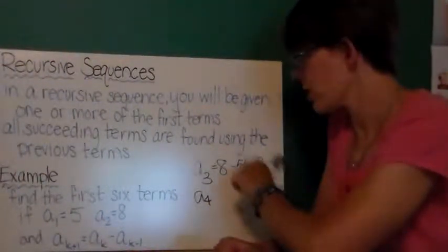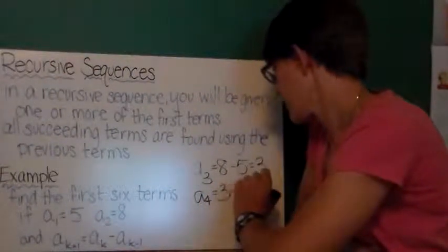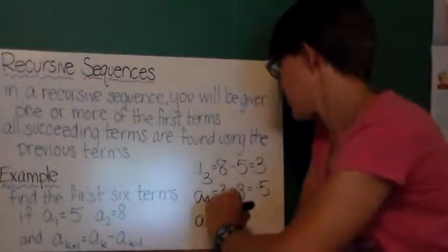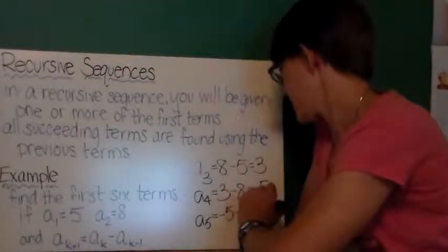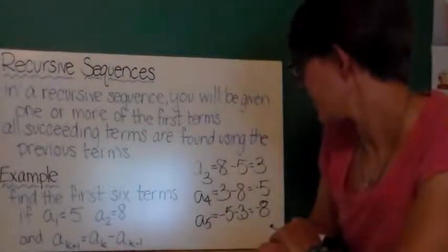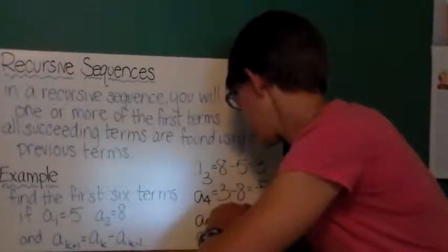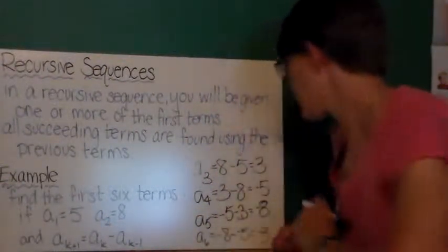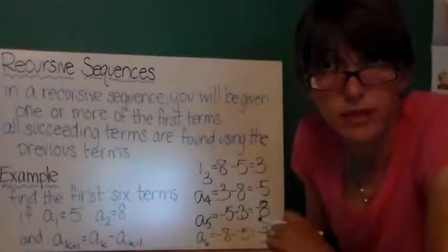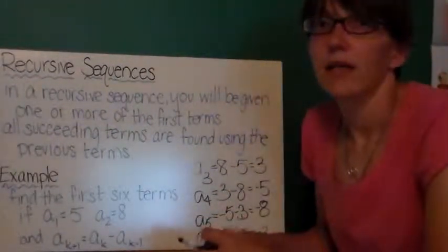A sub 4, I have to take this term and subtract 8. So I'm going to get 3 minus 8, that's negative 5. A sub 5, I'm going to do negative 5 minus 3, that's negative 8. I should have written negative 5 minus 3. So negative 5 minus 3 is negative 8. Then I'm going to do, for the sixth term, negative 8 minus negative 5. And that's going to give me negative 3. And you can continue this pattern for as long as you want. So you can write your own recursive sequence by just picking the first two terms, and then deciding what you want to do with them. Do you want to add them? Do you want to multiply them? And you can continue following the pattern to get a new sequence.